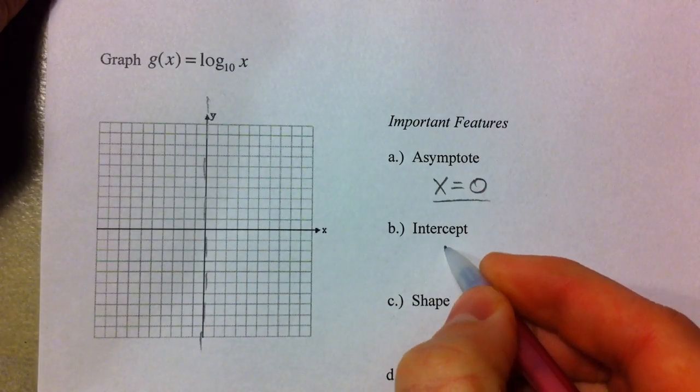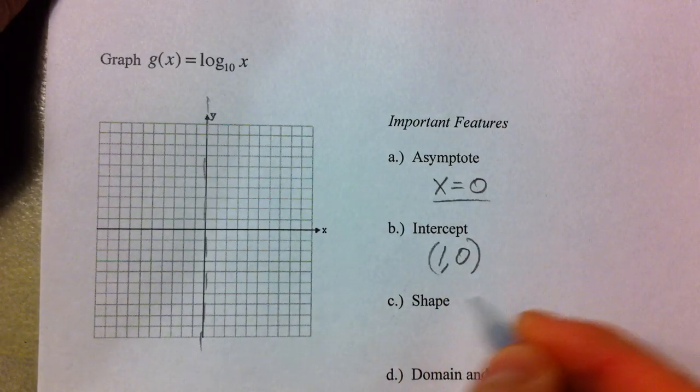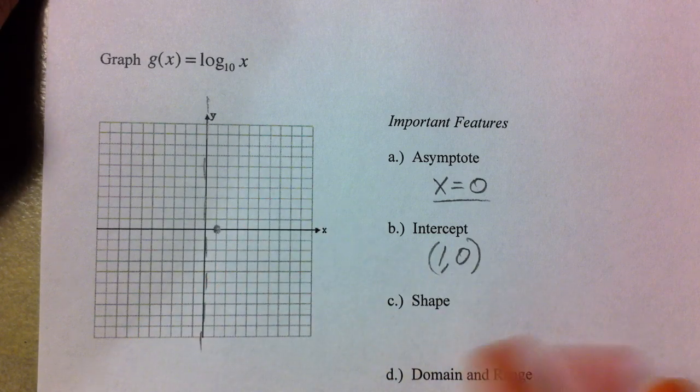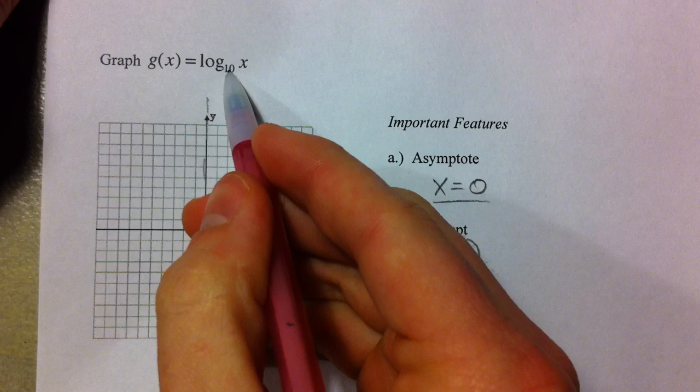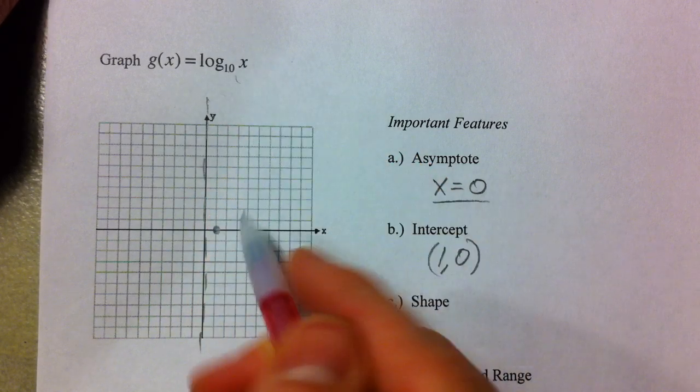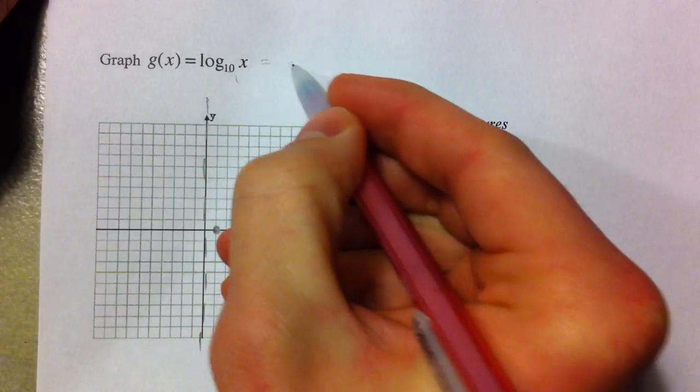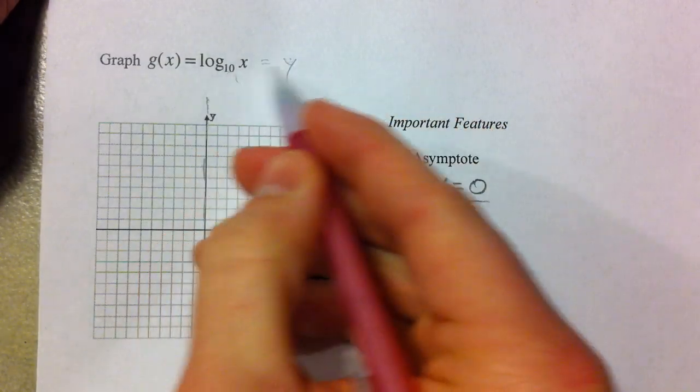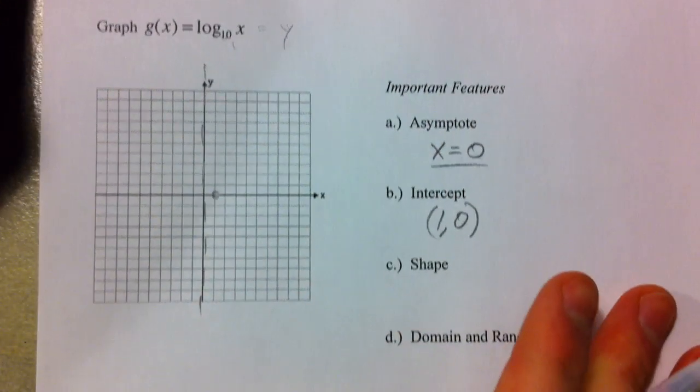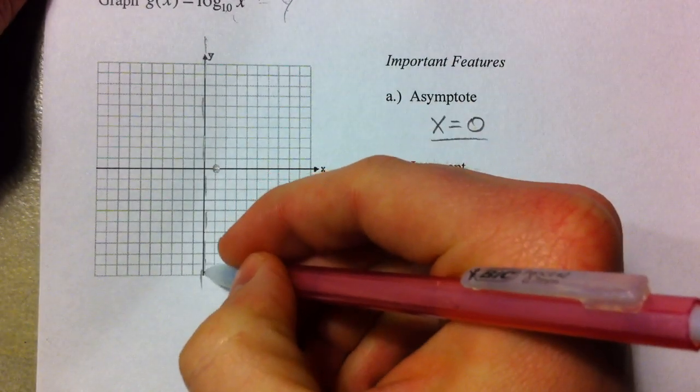The intercept 1, 0 is going to be your x-intercept no matter what the base is, because remember 10 to what power is 1? 10 to the 0 power is going to be our y value every single time. So 10 to the 0 for the y equals our x, and knowing the shape, it kind of looks like this.